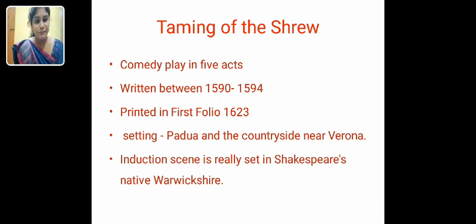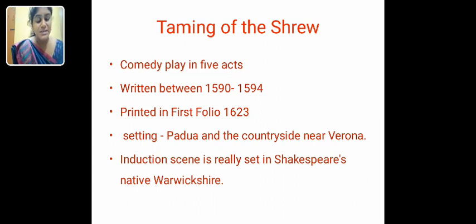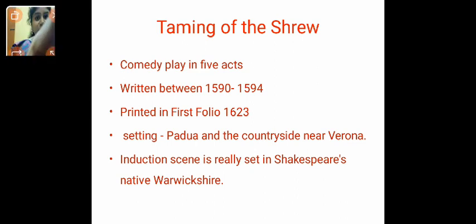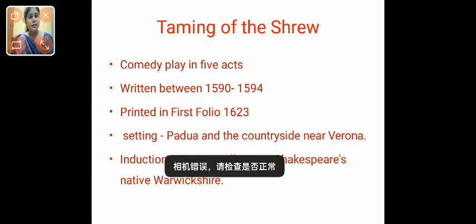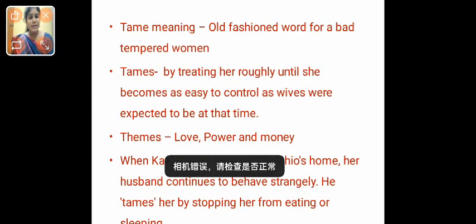It is a comedy play in five acts and it was written between 1590 to 1594. It was printed in the First Folio, which represents the paper that is in 1623. The setting of the play is Padua and the countryside near Verona. It started with the induction scene, which is really set in Shakespeare's native Warwickshire.